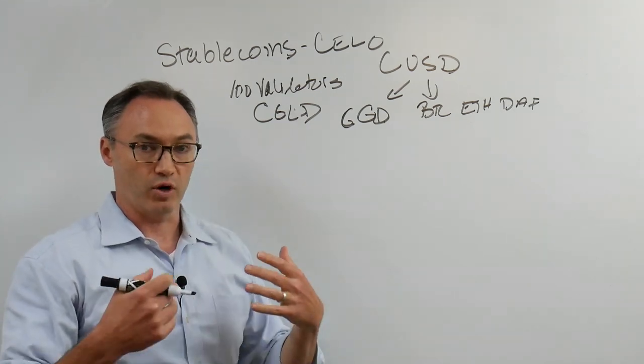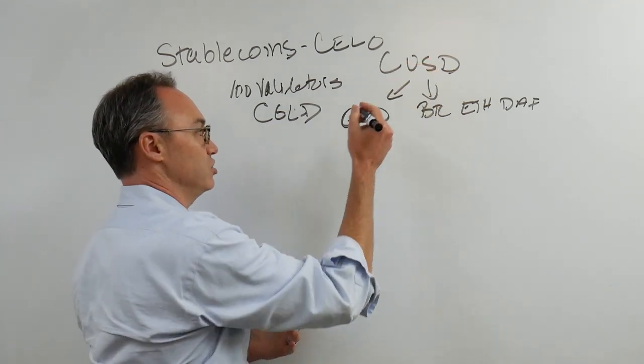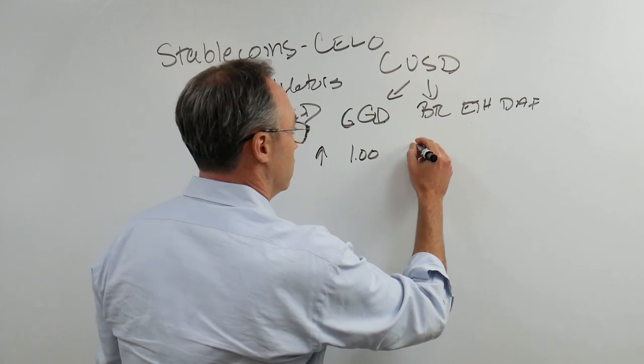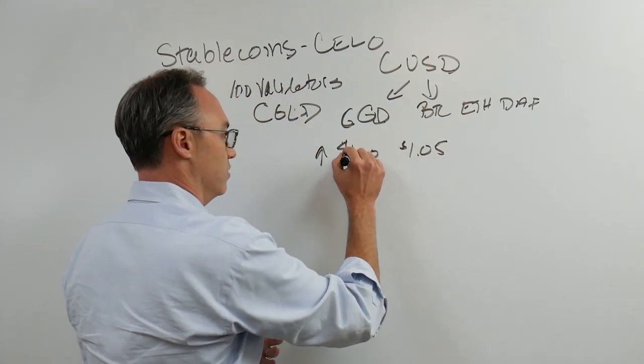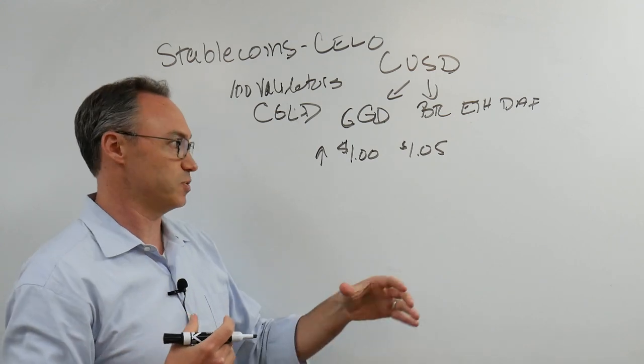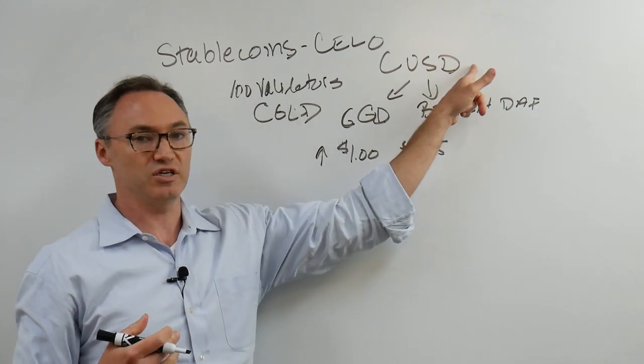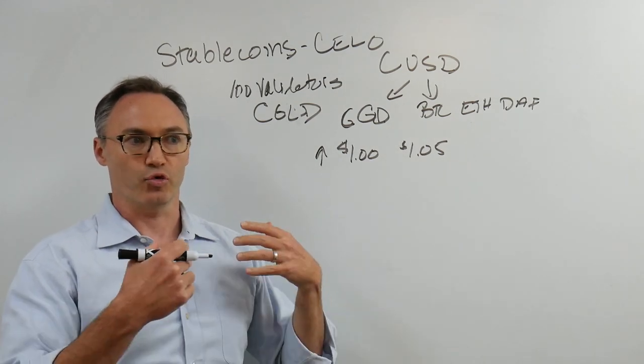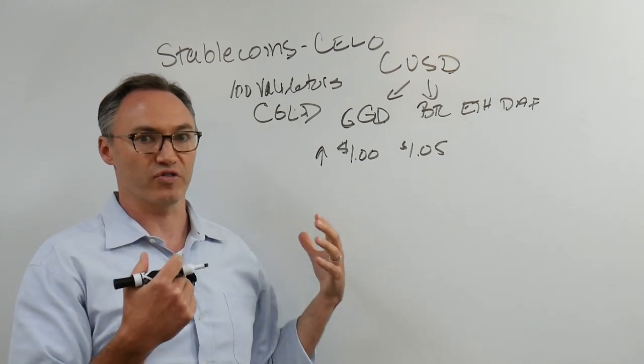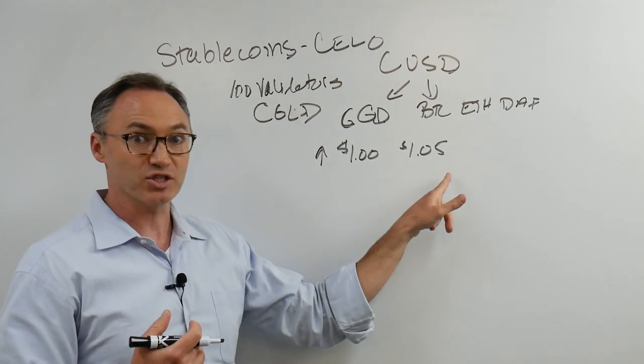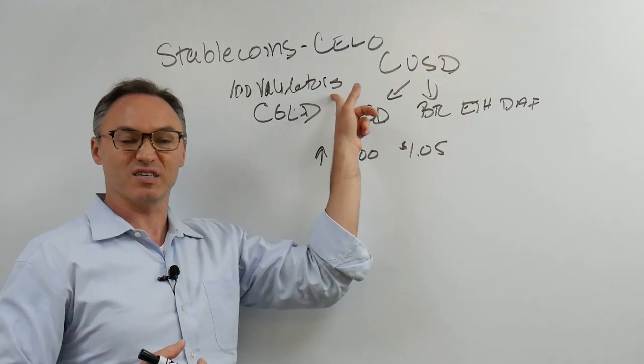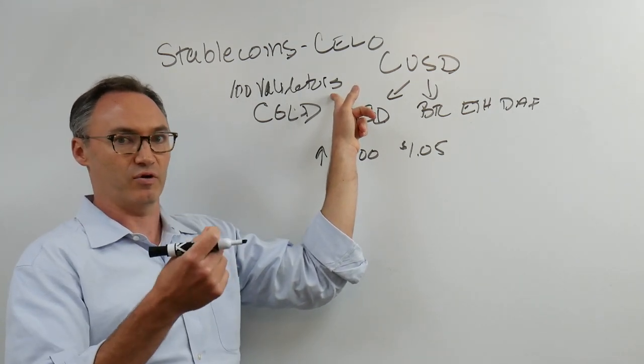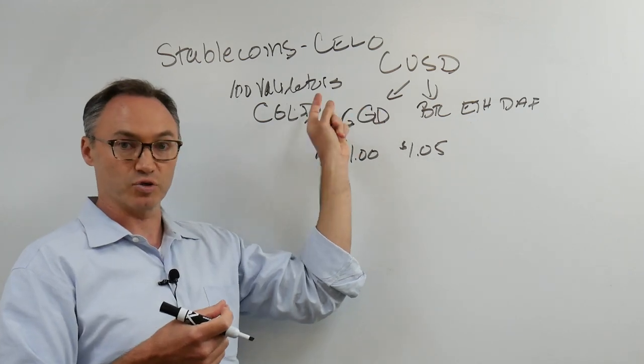Now, the question is, what happens if the value of CUSD goes up? Let's say the value goes up from a dollar to a dollar five. Let's think about what has happened in the market for that to transpire. That means there is more demand for CUSD than there is supply. More people are wanting to use it to transact. There needs to be more. There aren't enough, so we have to pay more than a dollar for it. That's really good for the validators because there's so much demand on the network.